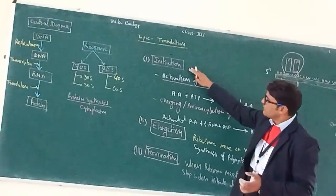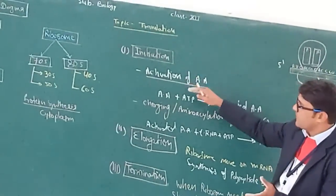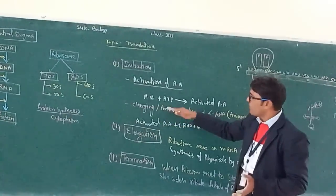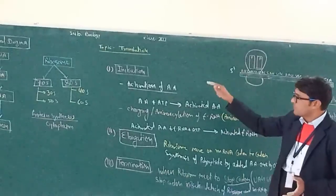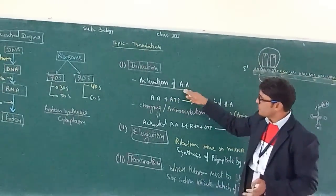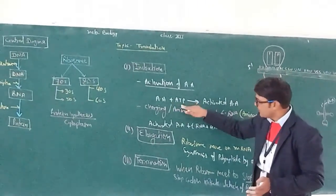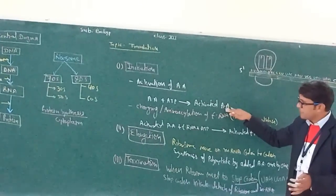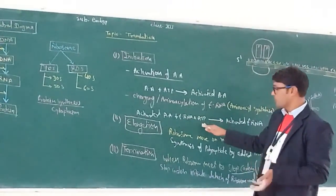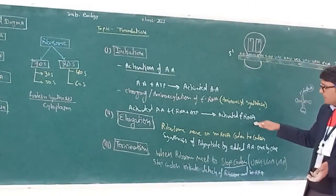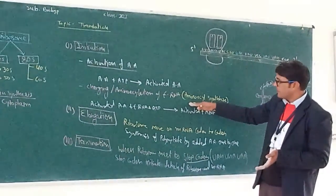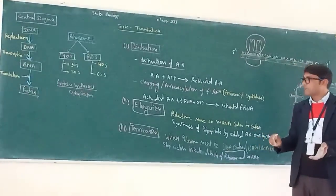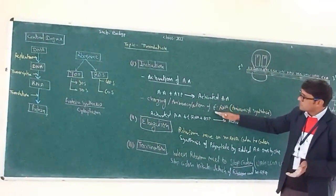First of all, in initiation, here we can see that in the initiation stage, amino acid is activated. After amino acid activation, charging of tRNA also occurs in the initiation step. In which amino acid, by the use of ATP, is converted into activated amino acid. After that, activated amino acid also binds to tRNA by the use of another ATP and is converted into activated tRNA. This process is catalyzed by an enzyme called aminoacyl-tRNA synthetase, and this process is known as charging of tRNA or aminoacylation of tRNA.